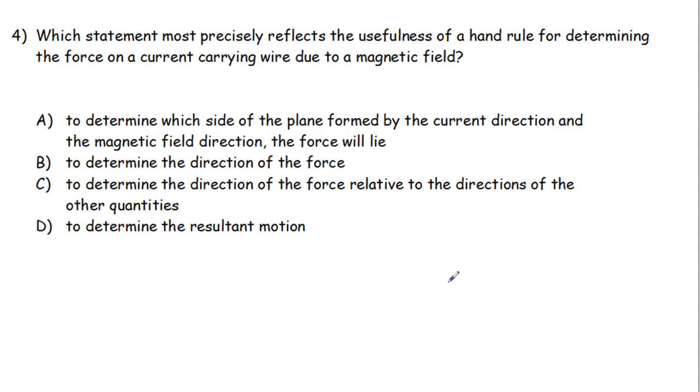So when we're using the hand rule to determine the direction of the force due to a current and a magnetic field, there's always a certain direction for the current, a certain direction for the magnetic field. And those two form a plane. Whenever you've got two vectors, they form a plane.